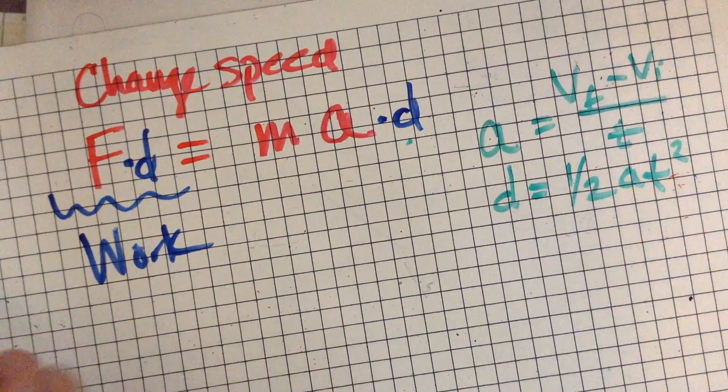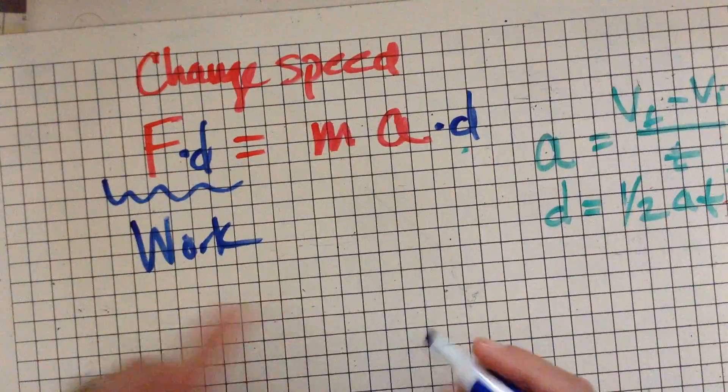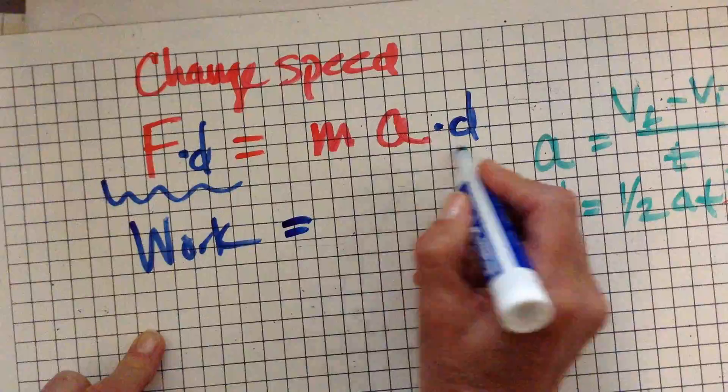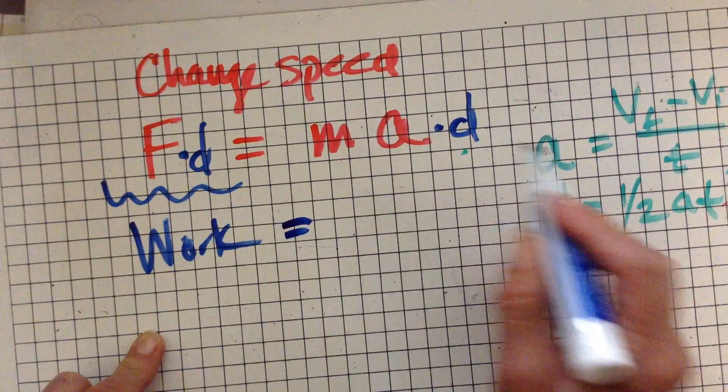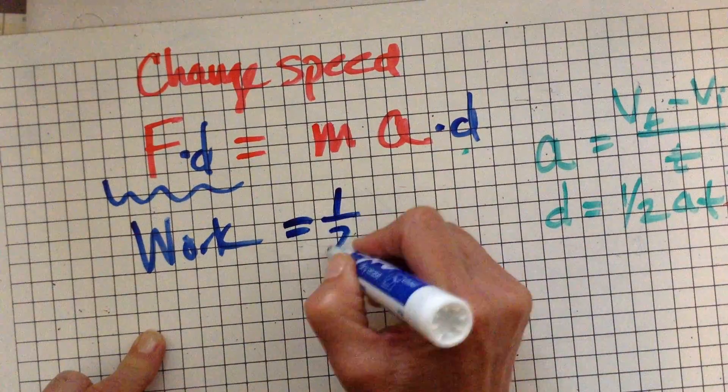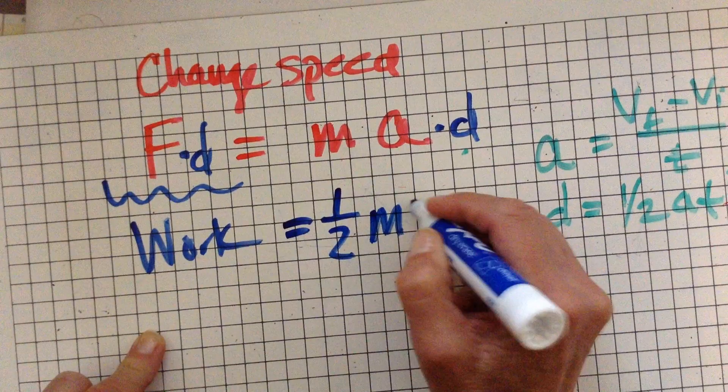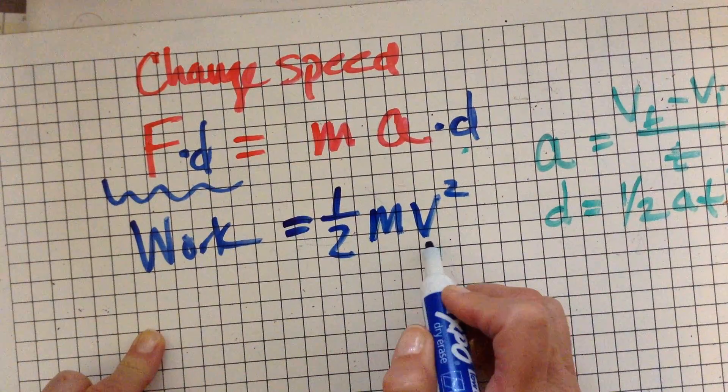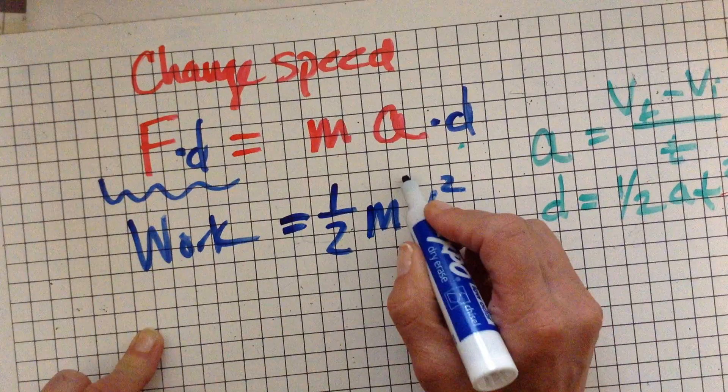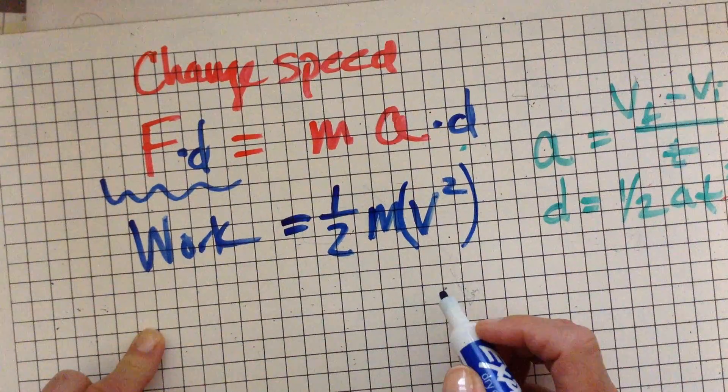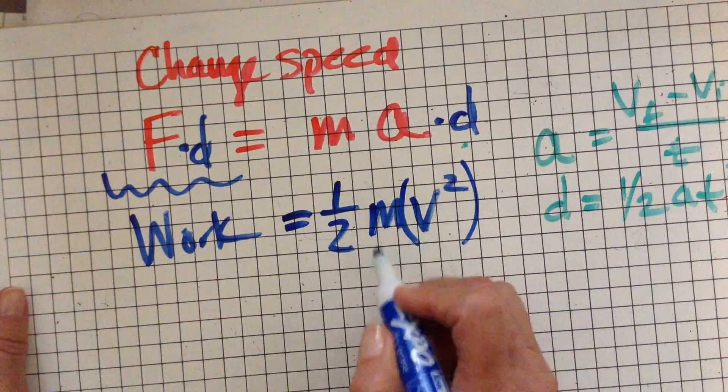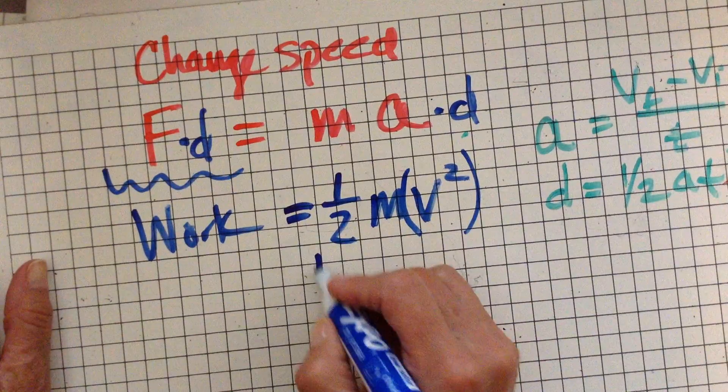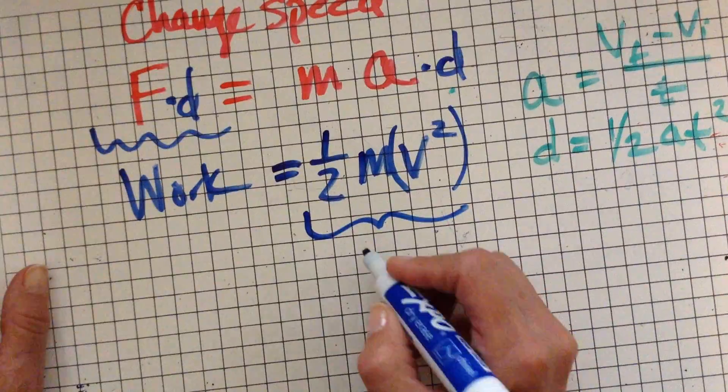And it did a bunch of algebra that I am not going to worry about. But the end result was, when you did all this algebra, it turned out that you could make this side of the equation, just by substituting and canceling and all this other stuff, result in this equation right here. One half times the mass times the speed squared. And remember, it's just the speed that gets squared, not everything gets squared, just the V. And this is our kinetic energy formula.